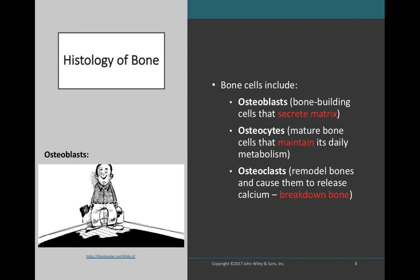Osteoclasts are a specialized bone cell that does the opposite of osteoblasts. While osteoblasts secrete bone matrix and make bone, osteoclasts break down bone and are integral to bone remodeling. Osteoclasts latch on very tightly and secrete enzymes to break down bone and release calcium to the blood. Bone remodeling is a nice balance between osteoblastic and osteoclastic activity, and is a process that is always occurring within our bodies.